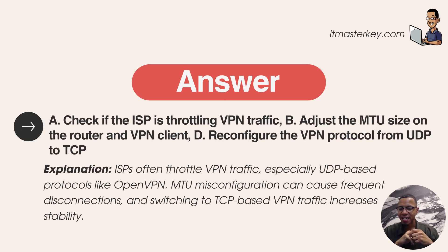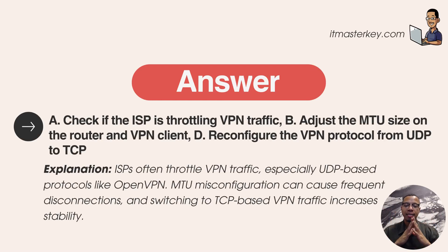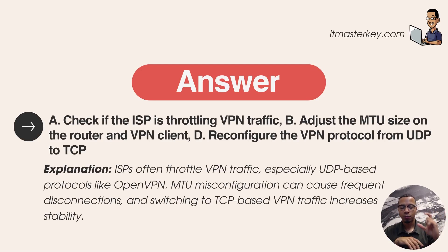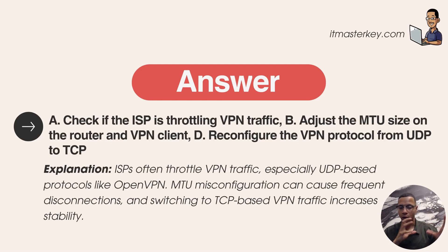A is check if the ISP is throttling VPN traffic. ISP stands for internet service provider — Comcast, Xfinity, whoever you use for your internet. If you're doing too much, they can actually throttle, meaning slow down your internet speeds. You want to check that first because you can do all this other troubleshooting — unplugging, buying stuff, deleting stuff — and it could be something out of your control.